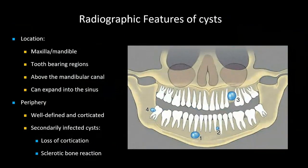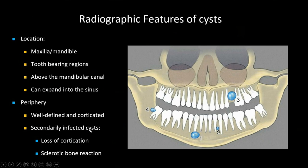Typical features of cysts: they're in the tooth-bearing regions, above the mandibular canal, and can freely expand into the sinuses. Most pathologies like to expand following the path of least resistance. A cyst will have very well-defined and corticated borders, but if secondarily infected they can lose that cortication, and we get a more sclerotic bone pattern with typical signs of inflammation.